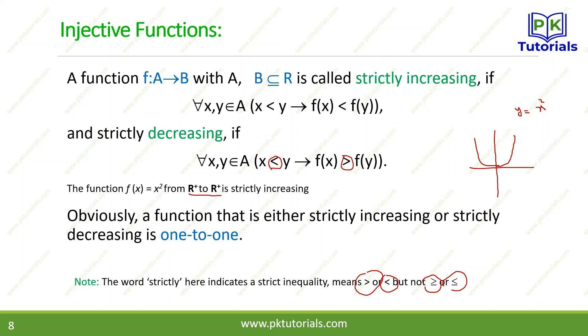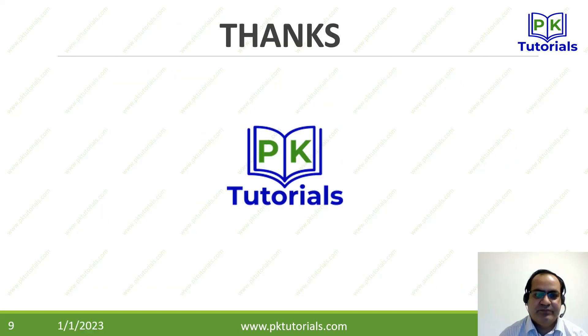Strictly decreasing کی مثال 1/x ہے — جیسے x increase ہوتا ہے، f(x) = 1/x decrease ہوتا ہے۔ یہ اس کی ایک مثال ہو سکتی ہے۔